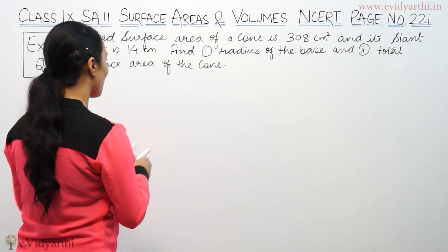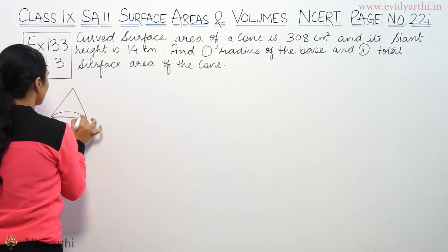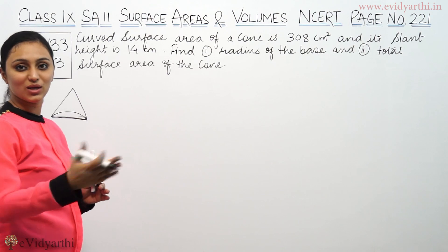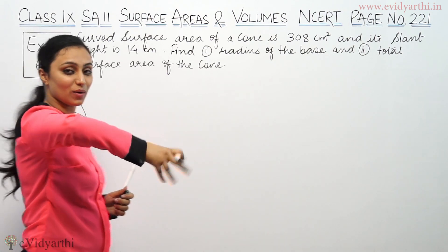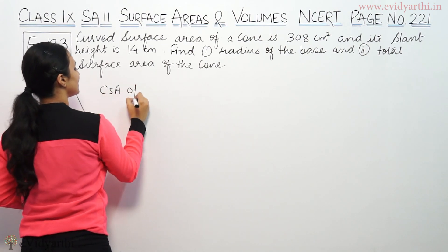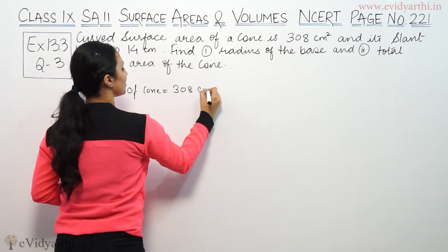This says curved surface area of a cone is 308 cm². So, this is a cone with a curved surface area. That means the base is not included. The curved means the upper portion is 308 cm².